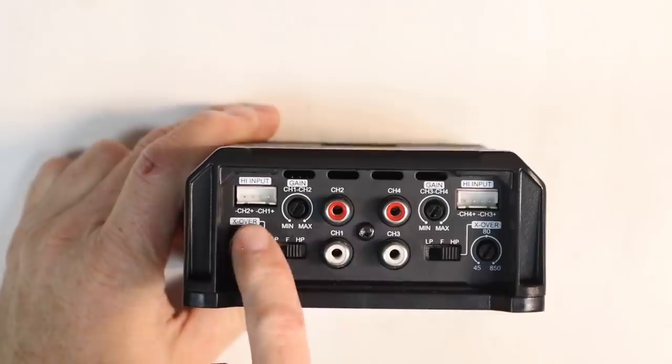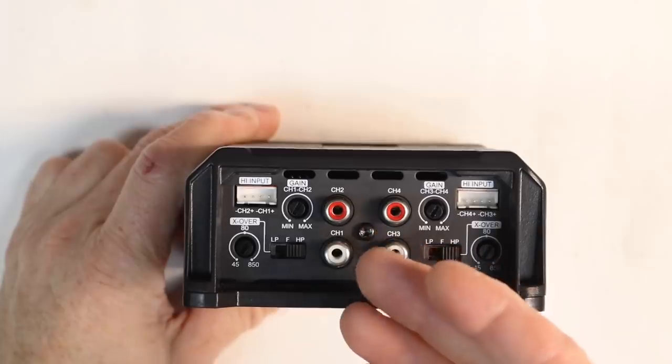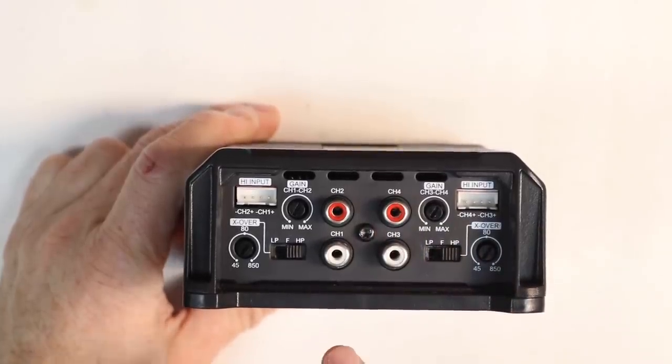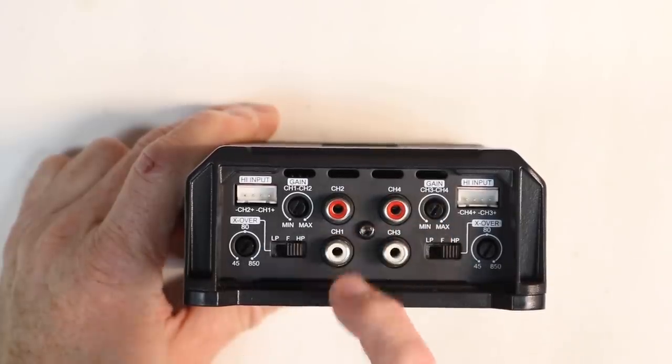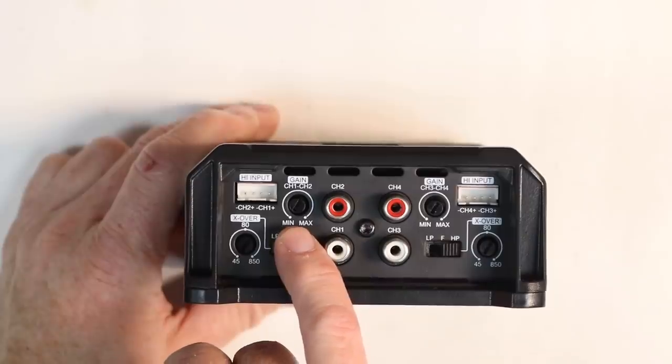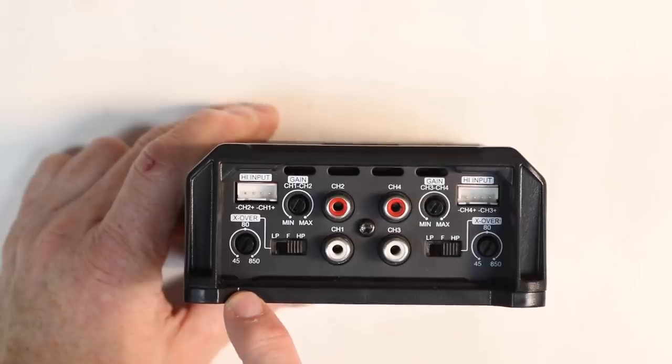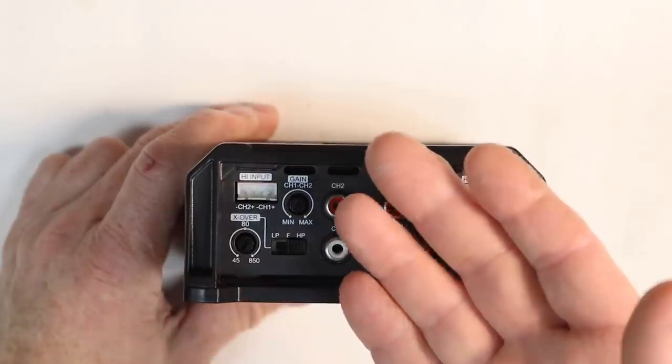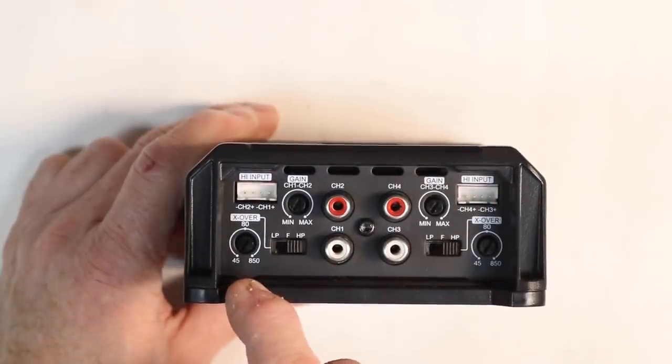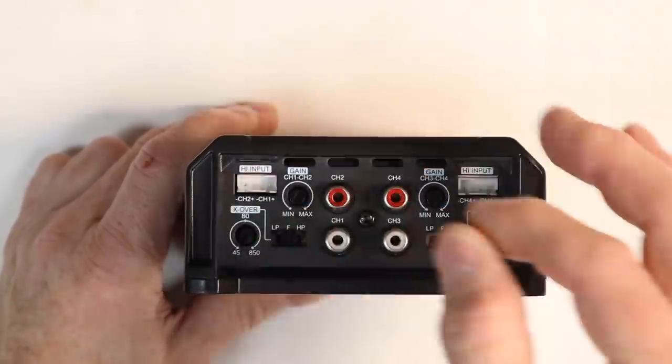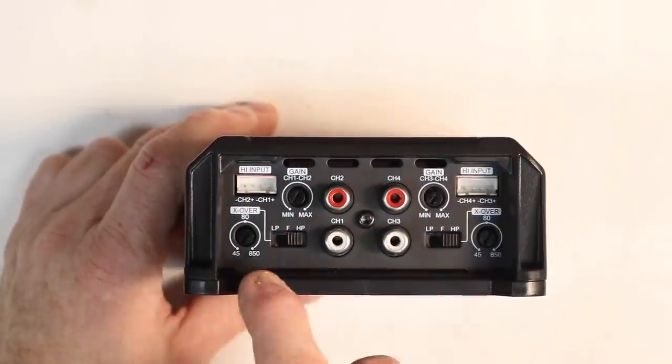We'll start here with the 404. In the top two corners you'll see the high level inputs. That's what that plug was for that we showed you earlier. You have your four channel RCA inputs, channel one, channel two, channel three, channel four. So green here on the bottom make sure you pay attention to that. Gain controls for channels one and two. Gain control for three and four. Crossovers between 45 and 850 hertz. That's pretty impressive. Most crossovers stop around 220 so go all the way up to 850. LP which is low pass. F which is full range no crossover and you have HP which is high pass located on both sides.